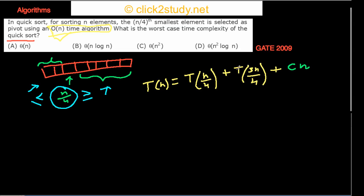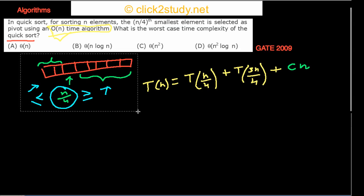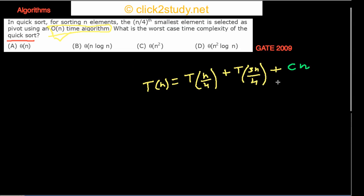So now I have to solve this recurrence relation. The master theorem is not applicable in this case because we apply it when we have only one recursive term. What we can still use is what is called a recursion tree.